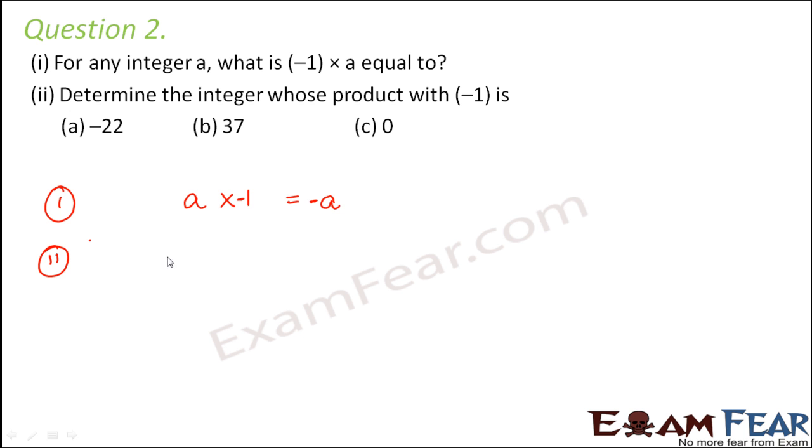Determine the integer whose product with -1 is -22. So what is that integer which, let us say I do not know the integer, which when multiplied with -1 gives -22? So as you saw here, whenever you multiply any integer with -1, its sign changes. So that means the integer which you would have multiplied with -1 must be the same integer with opposite sign. So basically, this integer would be 22.